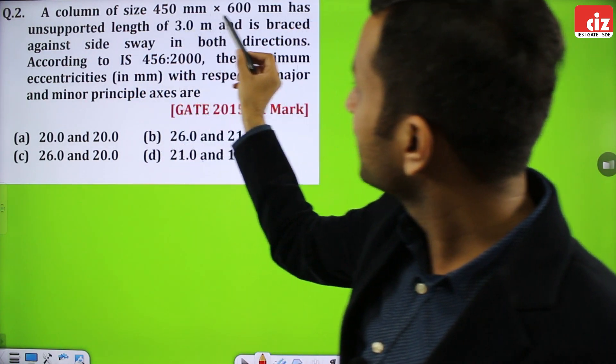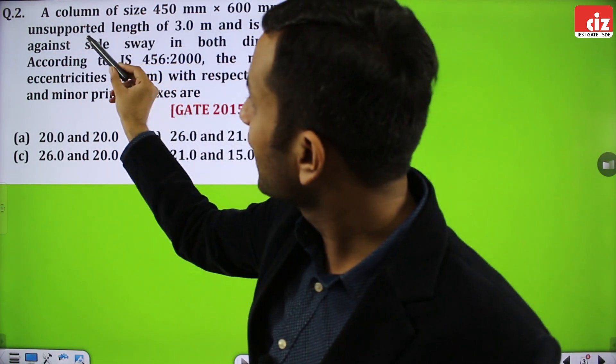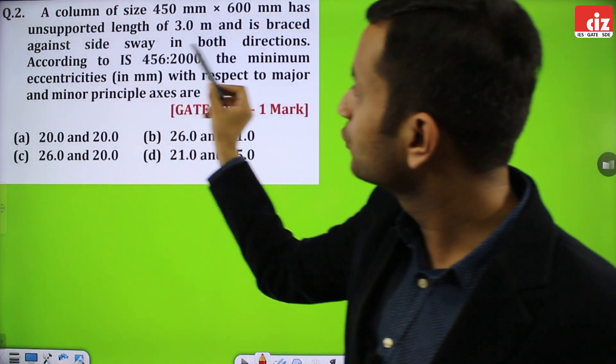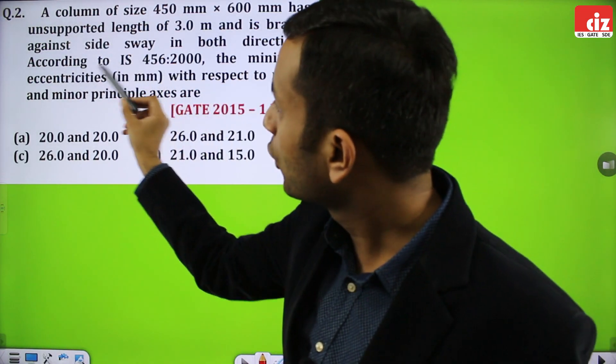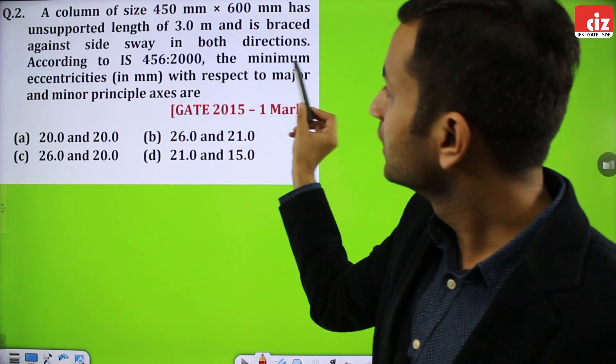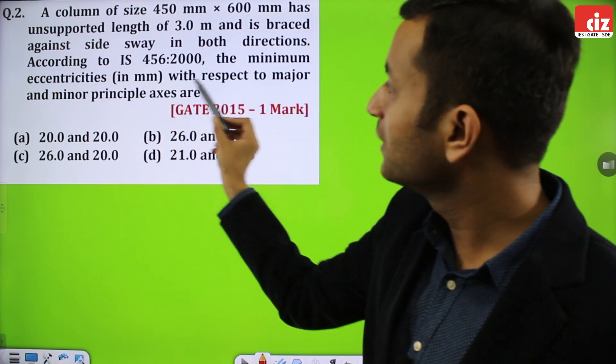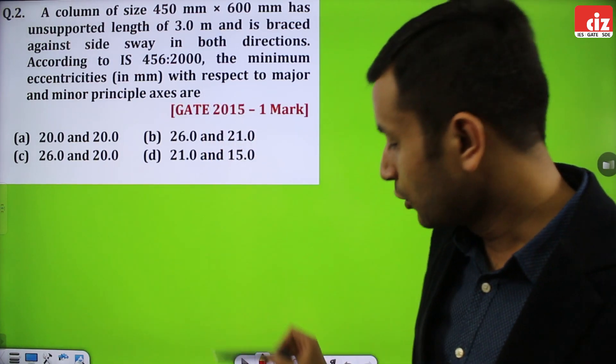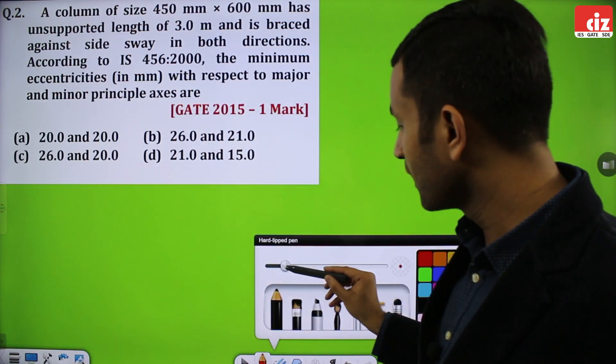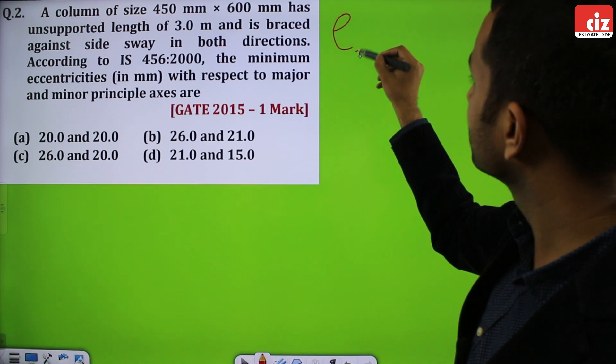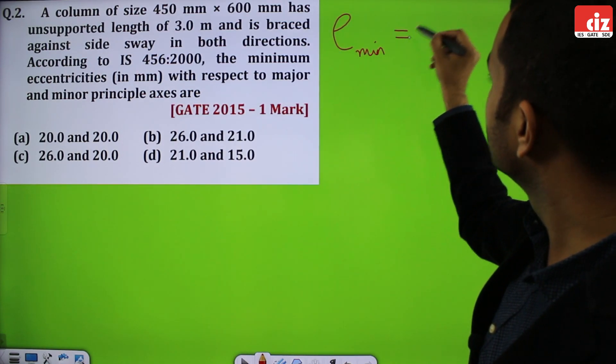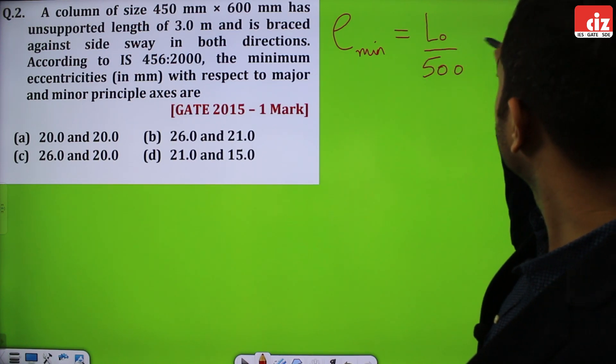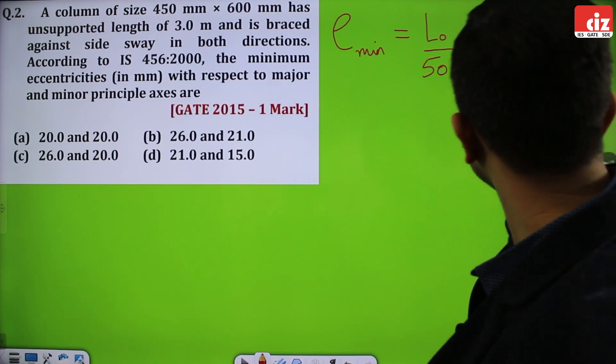A column of size 450 mm by 600 mm has unsupported length of 3 meter and is braced against sidesway in both directions. According to IS 456-2000, the minimum eccentricities in mm with respect to major and minor principal axis are. We have to check the minimum eccentricities. Let's remember the basic formula of minimum eccentricities.